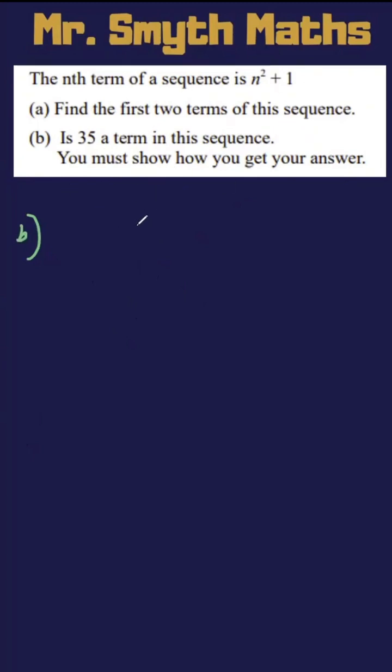Well, what we're going to do, I'm going to do this one backwards. So I'm going to start by putting n squared plus 1 equal to 35. I'm just going to solve this first, and then I'm going to explain to you why this works.